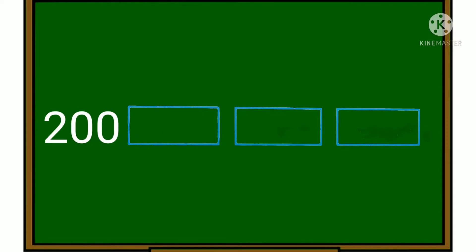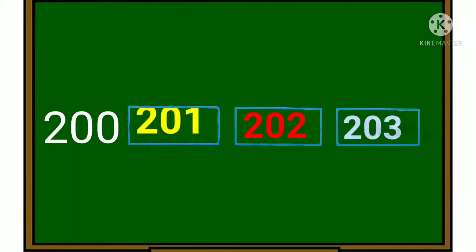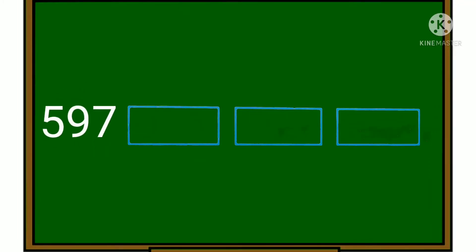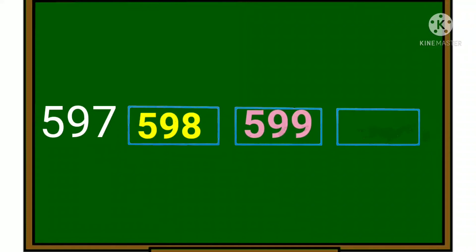Now see the next number: two hundred. The next three numbers are two hundred and one, two hundred and two, two hundred and three. Now see the third one: five hundred and ninety-seven. What will be the next three numbers? Five hundred and ninety-eight, five hundred and ninety-nine, six hundred.